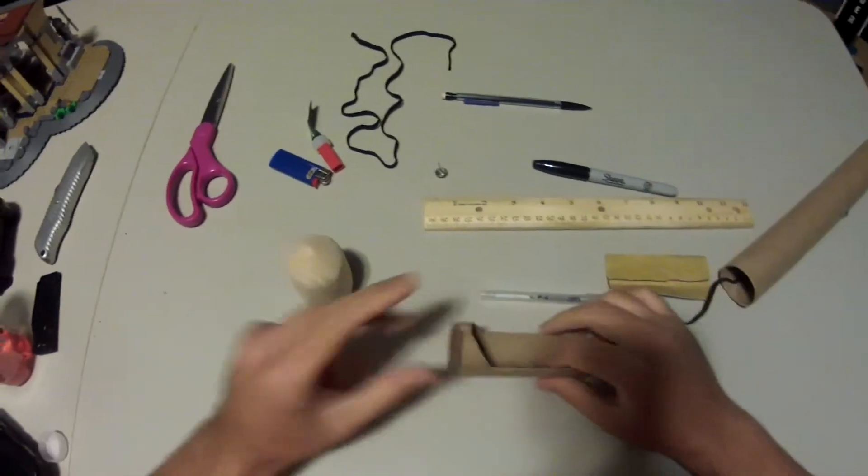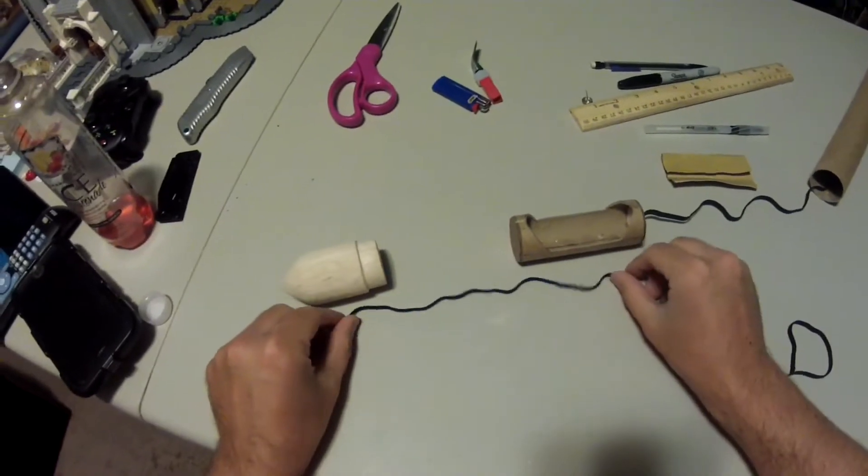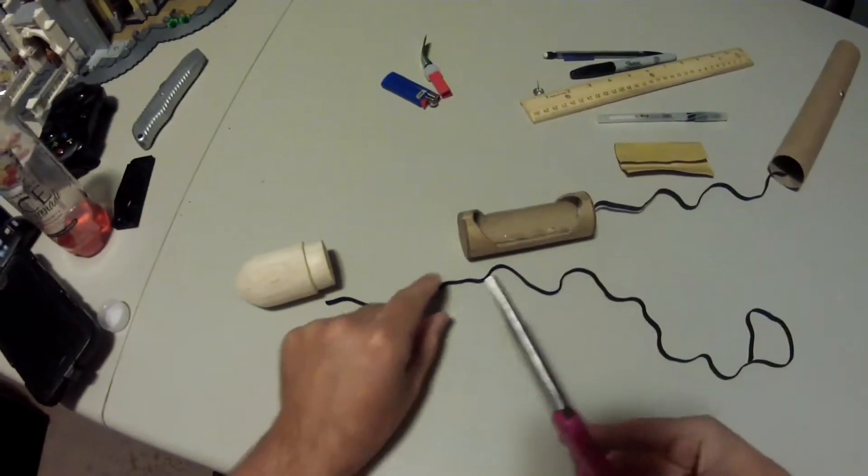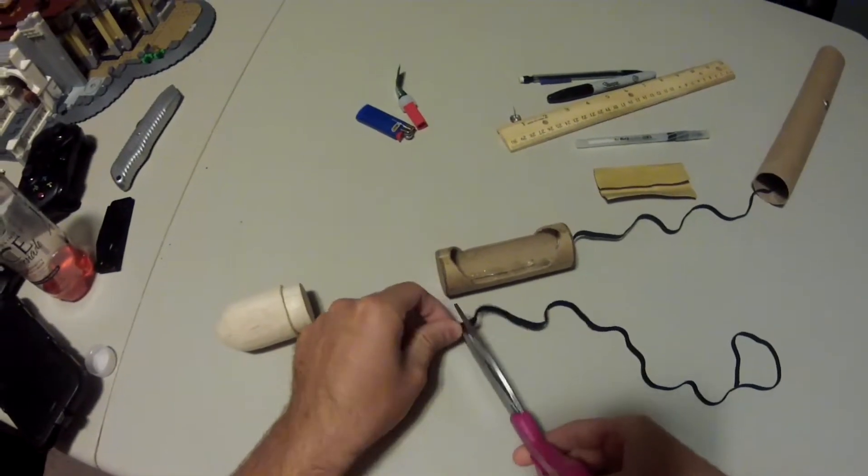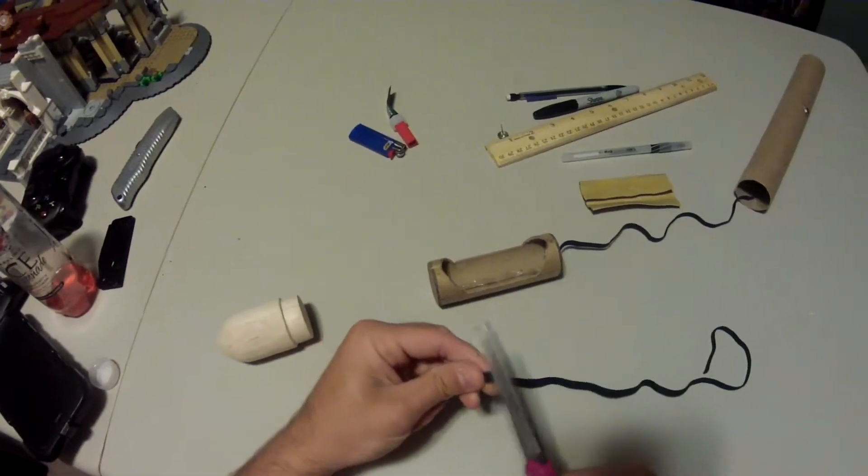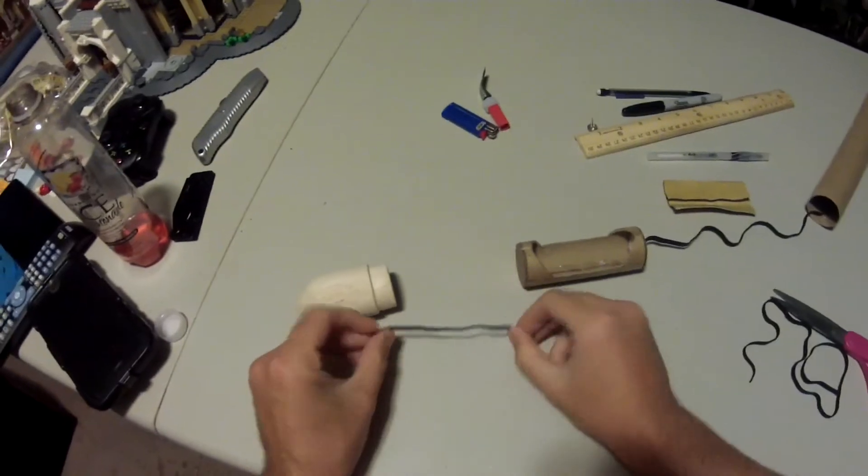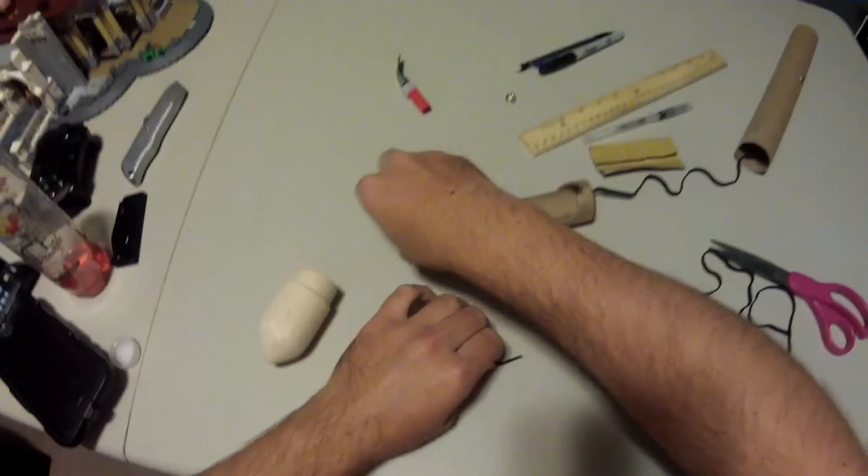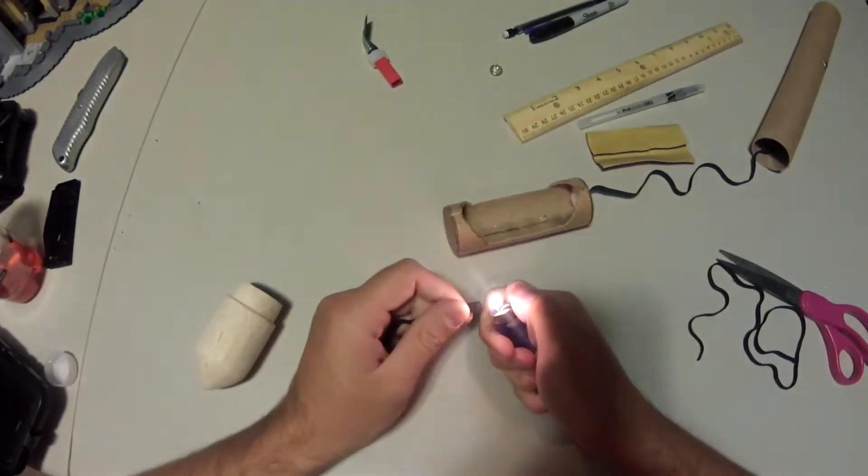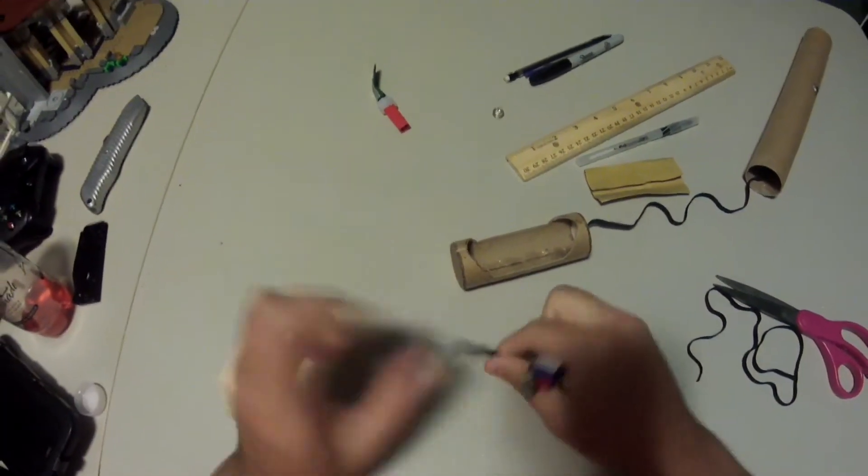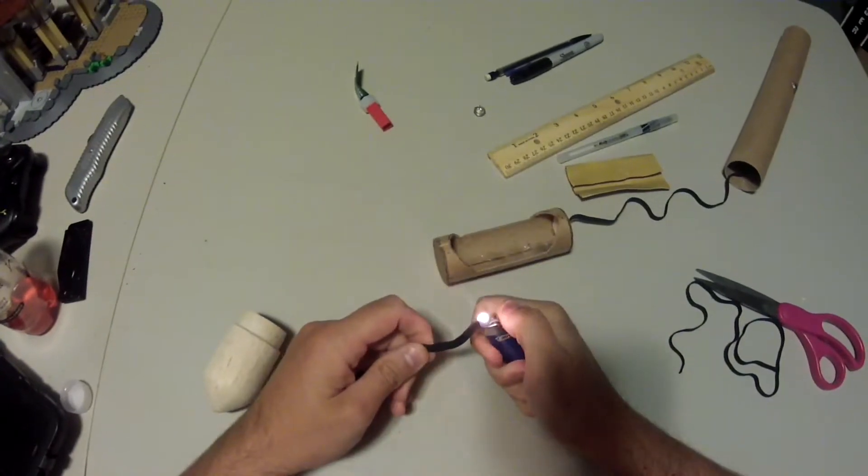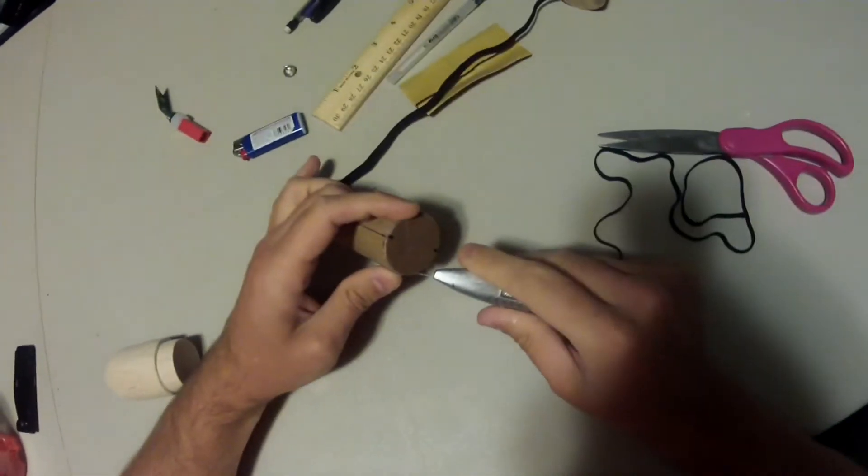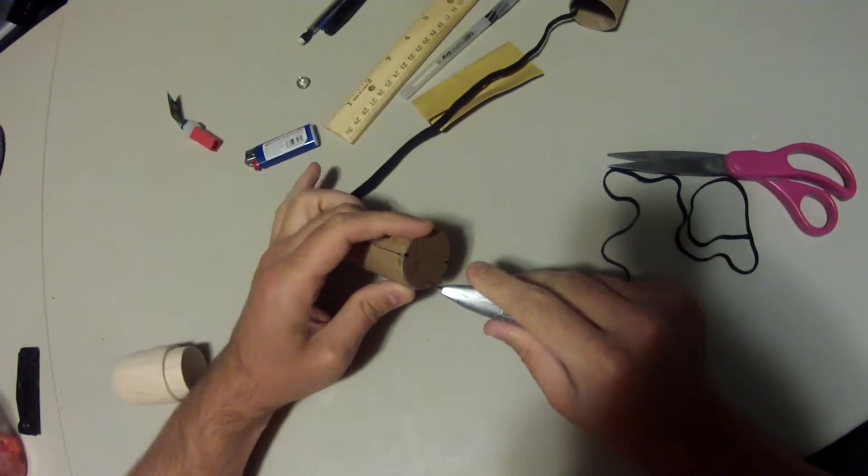Once we have our nose cone the way we want it, the next thing we want to do is attach it to the top of our piston. So we'll cut about five inches of shock cord, the same shock cord we used to attach our piston to the rocket tube. And of course I'm going to singe the ends of my shock cord so it doesn't fray.